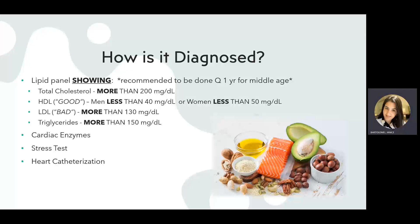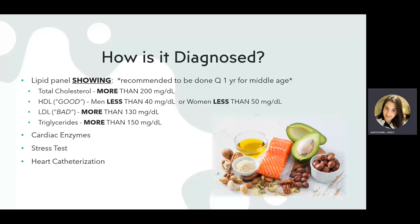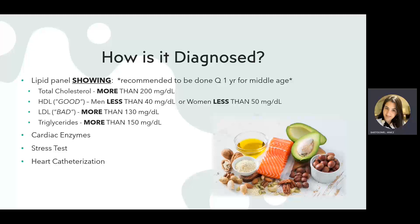Another indicator is if your HDL is less than 40 in males and less than 50 in females. HDL is the good cholesterol — it kind of eats the bad LDL, so we want that number high. Also, if you have LDL more than 130 and triglycerides more than 150, those are also diagnostic indicators.